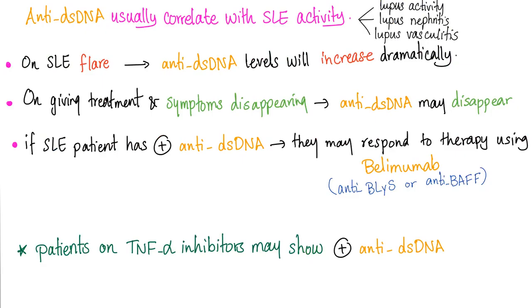Anti-double-stranded DNA correlates with lupus activity, lupus nephritis, and vasculitis. When you have a flare, you have increased levels of anti-double-stranded DNA. When the flare is gone, the anti-double-stranded DNA decreases.